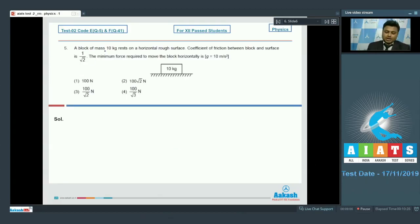Moving on to the next question, that is question number 5. A block of mass 10 kg rests on a horizontal rough surface. Coefficient of friction between block and surface is 1 upon under root 2. The minimum force required to move the block horizontally is what? Given that g is equal to 10 meter per second square. Now we must be knowing the expression for minimum force required to move the block horizontally on a rough surface is given by f minimum equals mu times mg whole divided by under root 1 plus mu square. Now let us put the value of all the data given in expression and we will get f minimum.